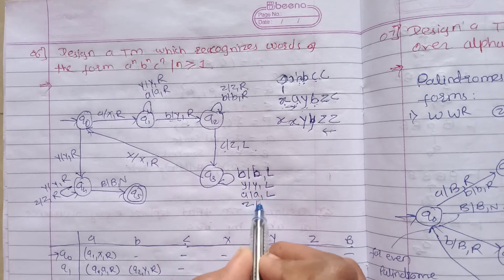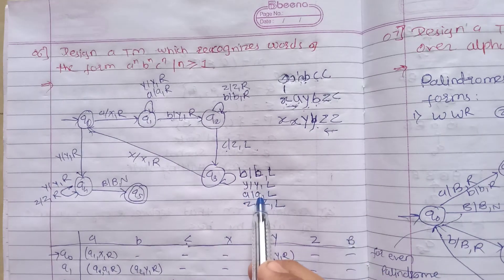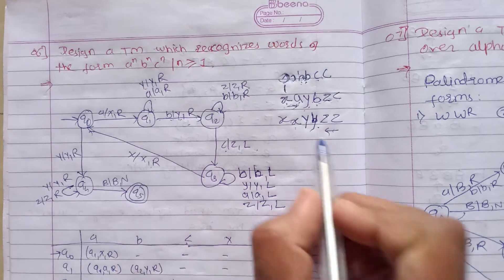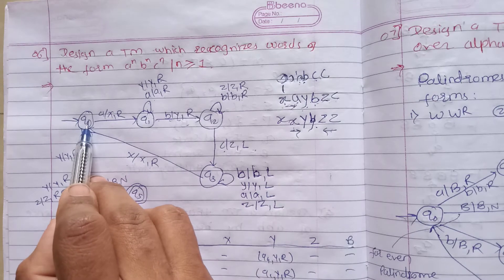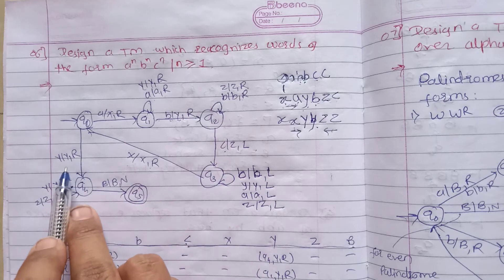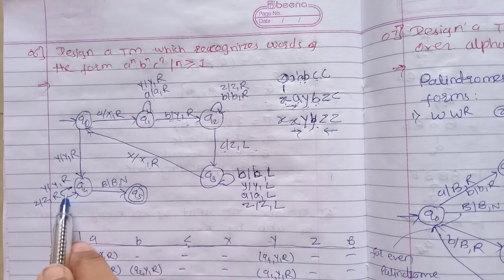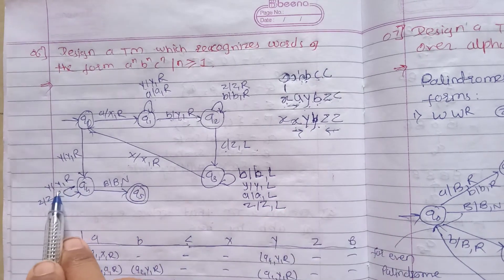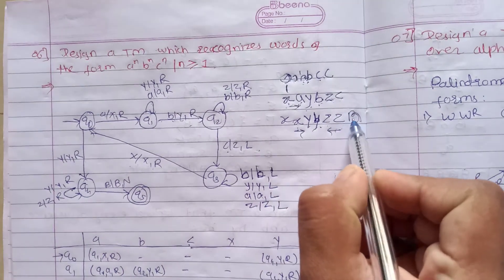From here we move right. Now at q0, we get y, which means the number of a's has been processed. y will be replaced with y, movement right. Again y is encountered, so replaced with y, movement right. z will be replaced with z, movement right, until we reach blank.